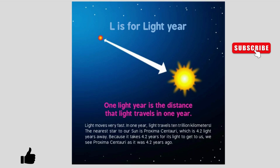L is for light year. One light year is the distance that light travels in one year. Light moves very fast — in one year, light travels 10 trillion kilometers. The nearest star to our Sun is Proxima Centauri, which is 4.2 light years away. Because it takes 4.2 years for its light to get to us, we see Proxima Centauri as it was 4.2 years ago.